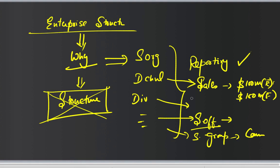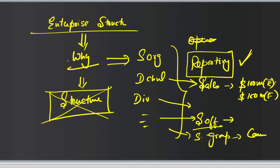These are all examples of reports that can be pulled once you create your master data and transactional data according to a particular structure — in this case, the enterprise structure. So reporting is the primary reason why you use enterprise structure. There is another reason, which is more operational.